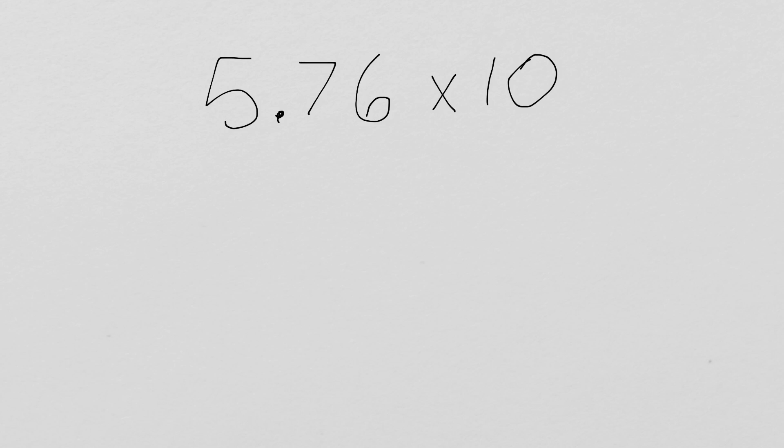To start off with, we are going to work with 5 and 76 hundredths times 10. Now, when we are multiplying by a power of 10, and it's important to notice that it is only with powers of 10, this works. If it isn't a power of 10, we can't do this trick.